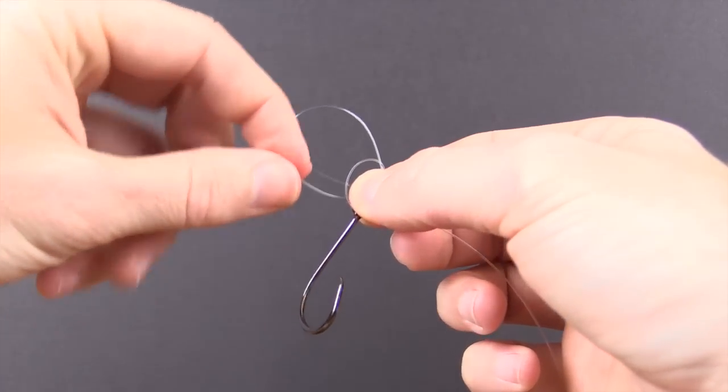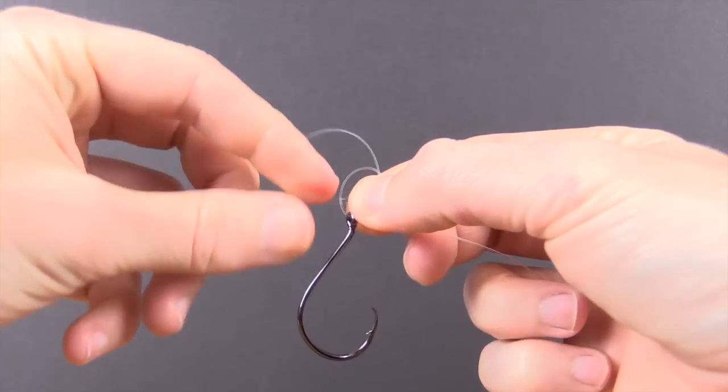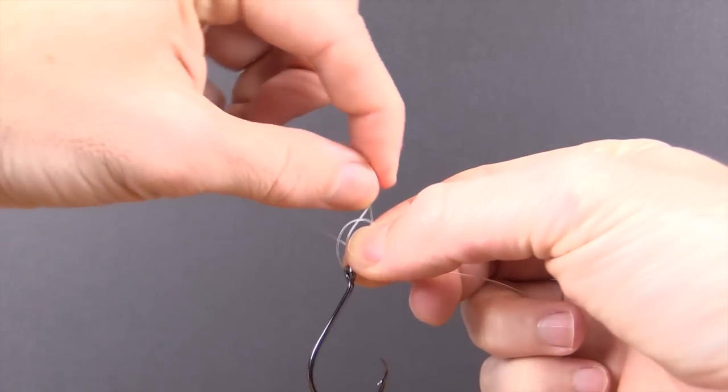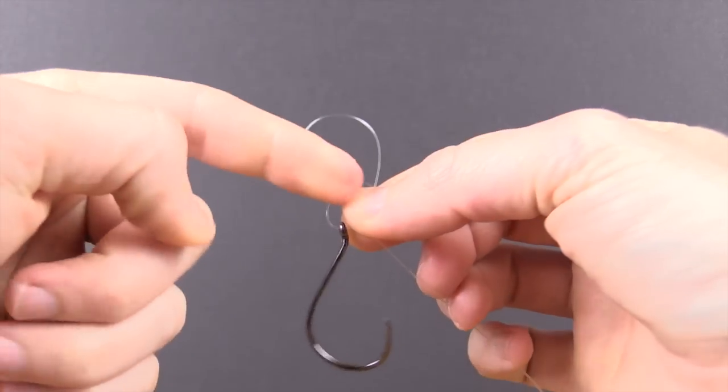And the final loop is a real small one right through the middle of those two. So we did the big loop, then the second loop. And now in between those two, we're going to pull this one and just lock it in. I always just lock it into place with my fingers.